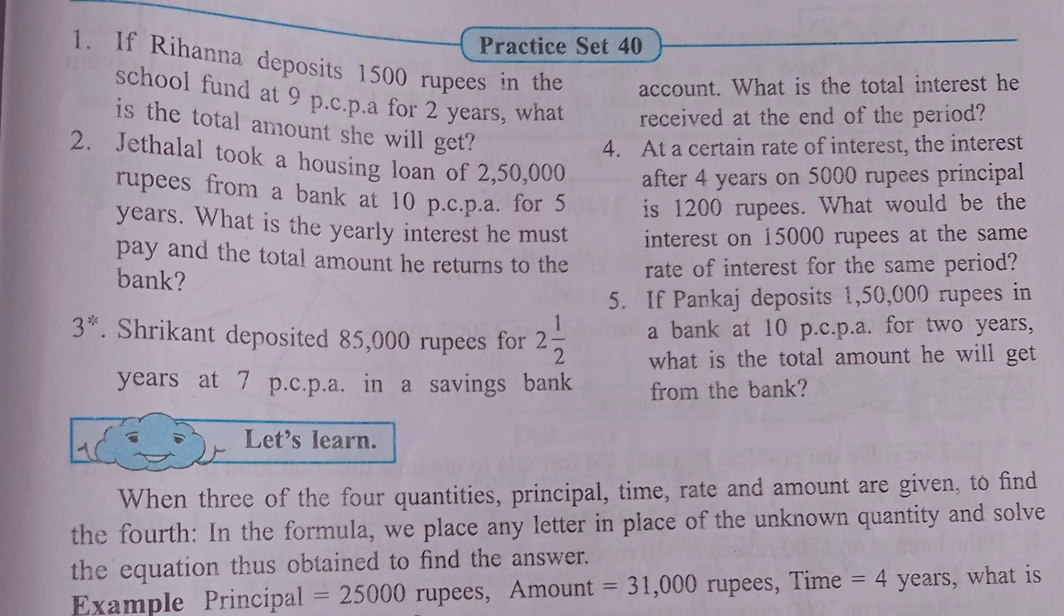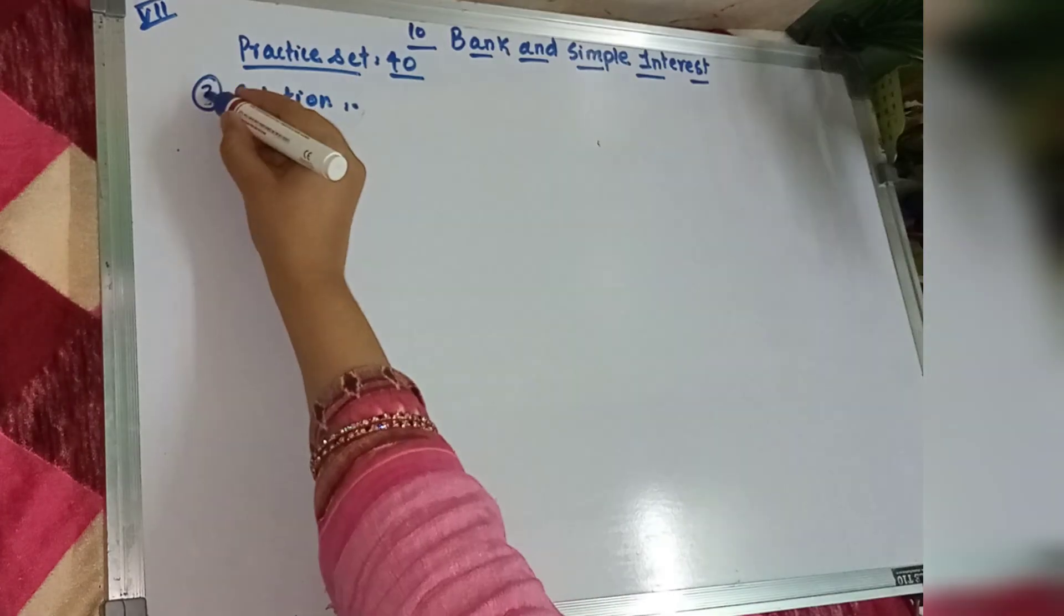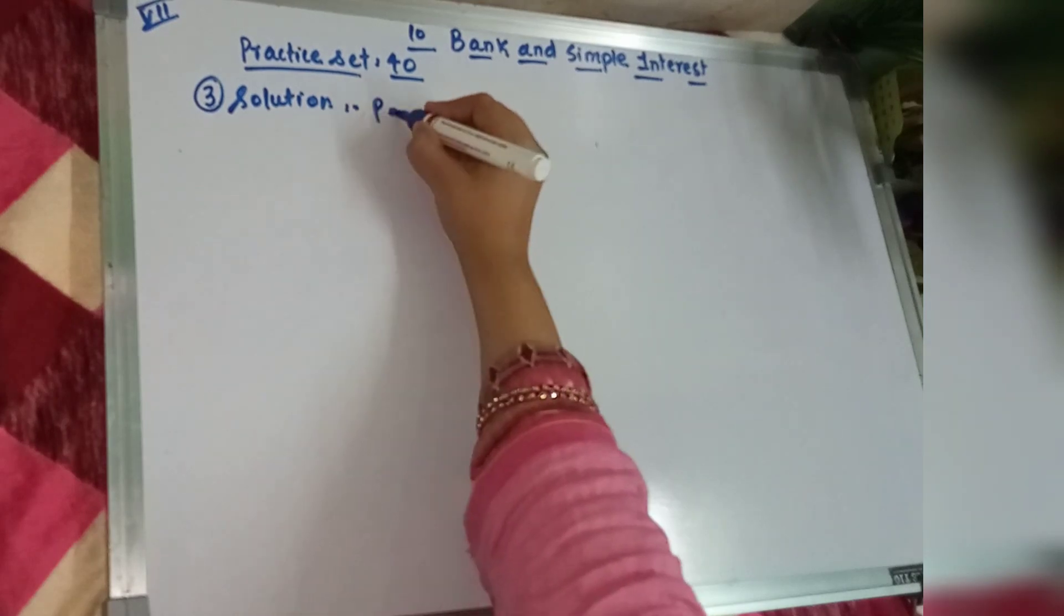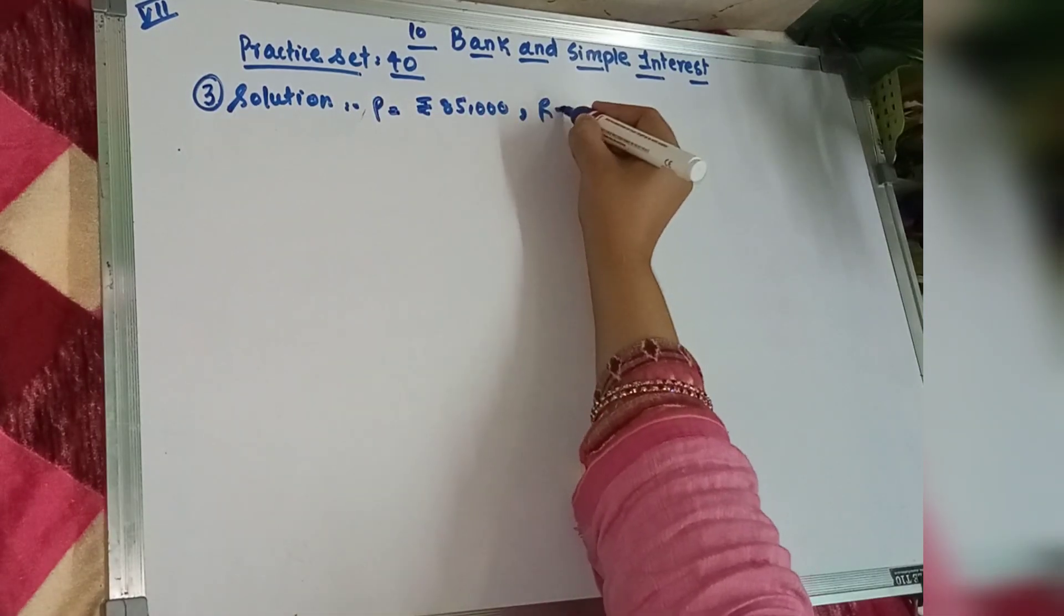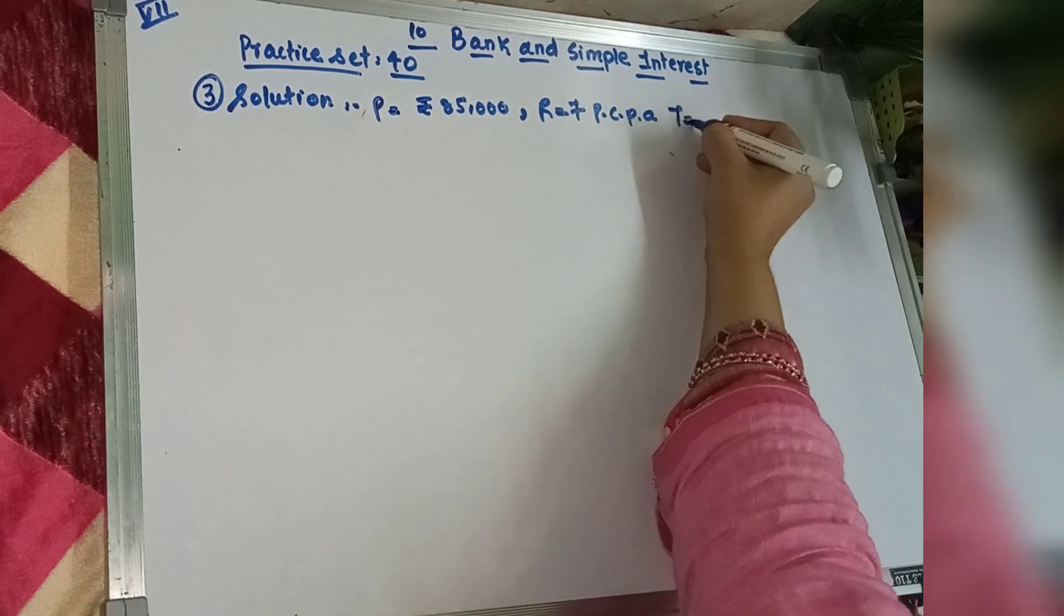Third question. Shrikant deposited Rs. 85,000 for 2 and a half years at 7 PCPA in a saving bank account. What total interest will he receive at the end of the period? Then humara yaha principal 85,000 at 7 PCPA. Humko yaha par interest find out karna hai.